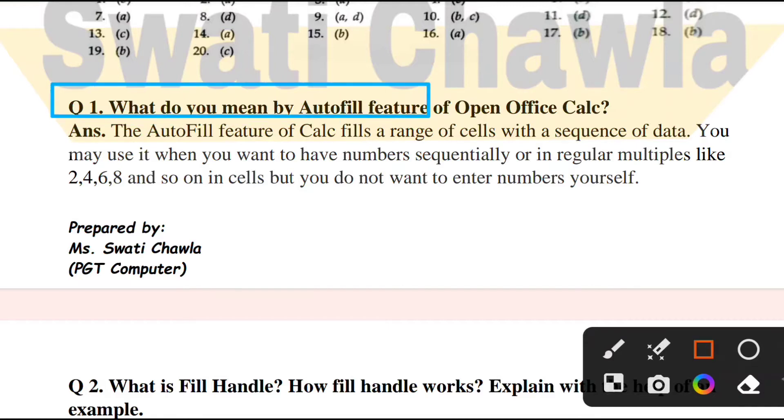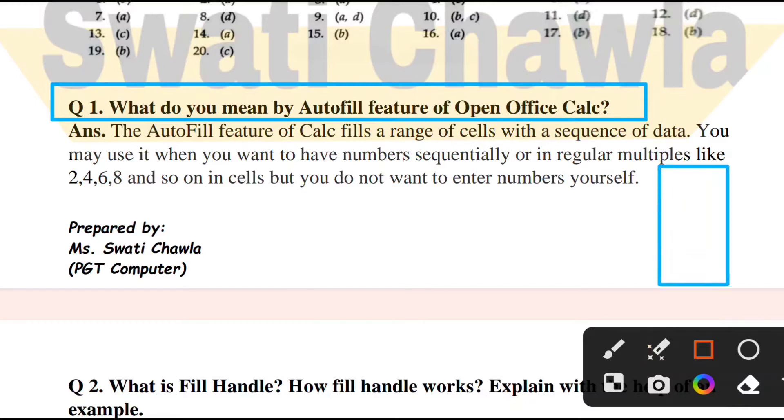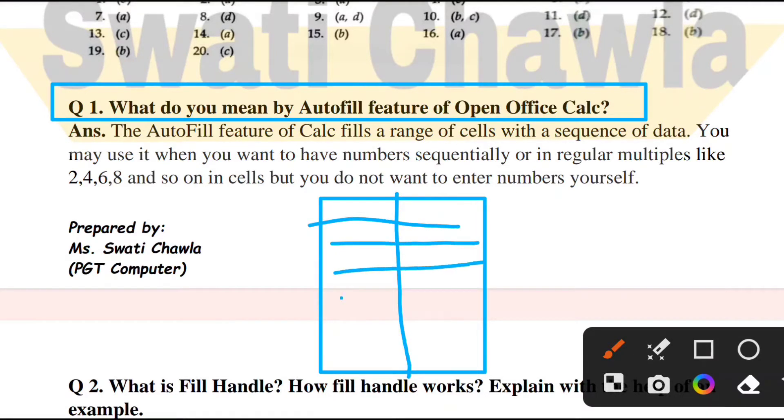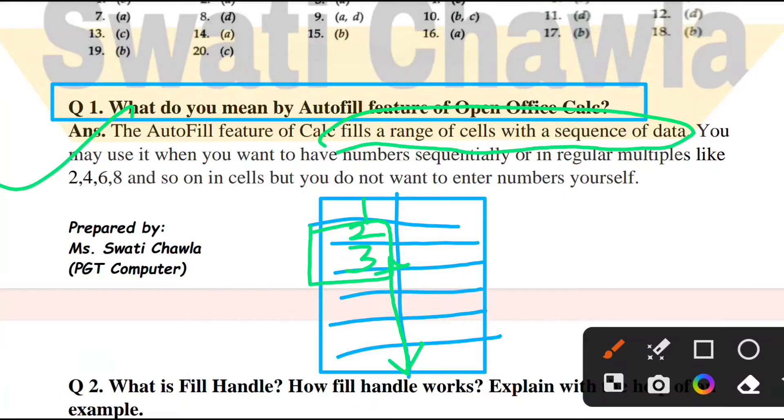Now let's start with our first question. Question 1: What do you mean by AutoFill feature of Open Office Calc? AutoFill means automatically, and fill means values being filled. Here is your Open Office Calc sheet with cells. If you write values like 1, 2, 3, then select these cells and drag them, automatically values fill. This feature is called AutoFill.